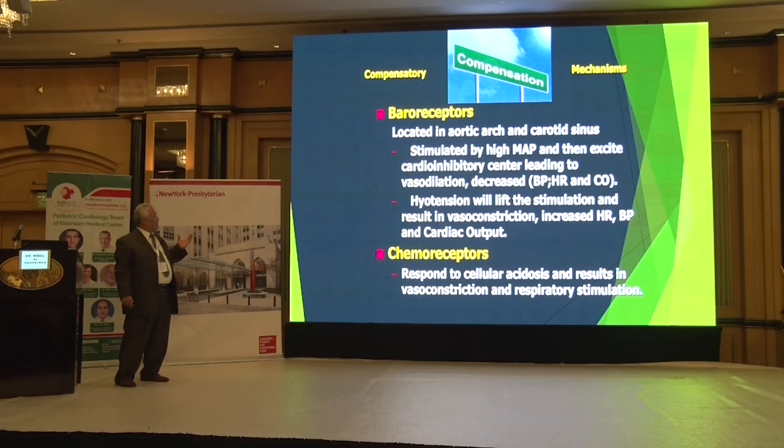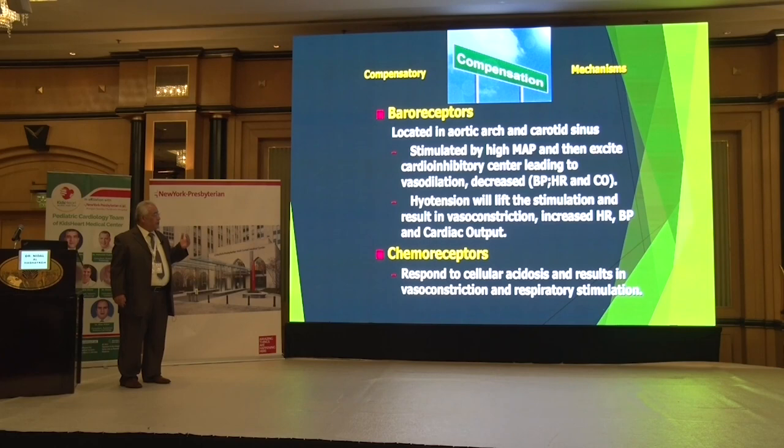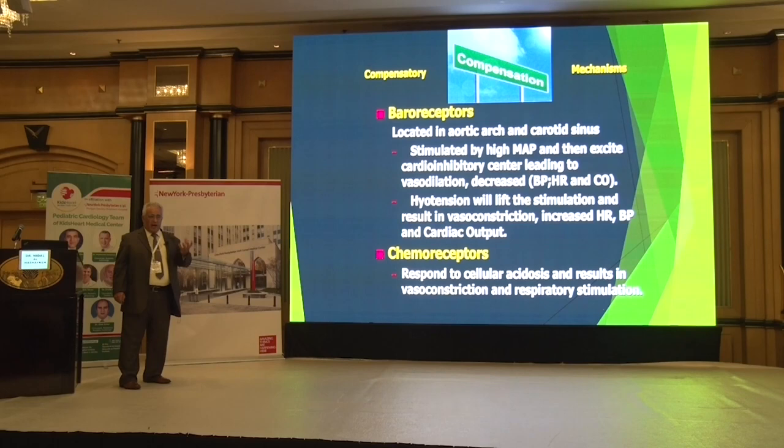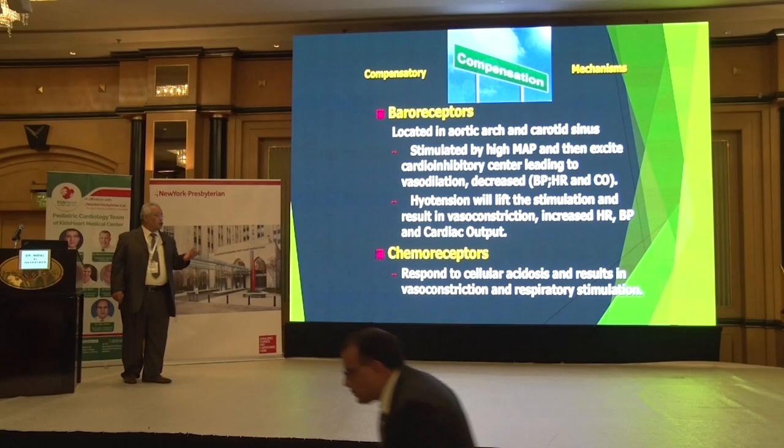There are a lot of compensatory mechanisms which are more powerful in children than in adults. Baroreceptors are located in the aortic arch and the carotid sinus. They are stimulated by high MAP: if MAP is high, blood pressure will be low, vasodilation occurs, and cardiac output will be low. If you remove this stimulation by low MAP, the inverse occurs — vasoconstriction, increase in heart rate, increase in blood pressure, and ultimately increase in cardiac output.